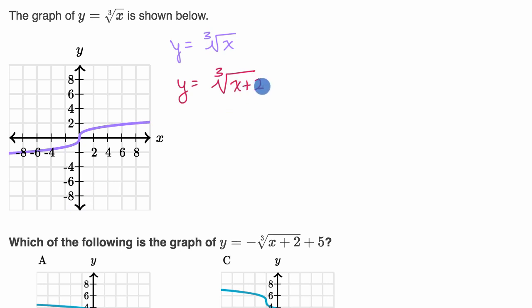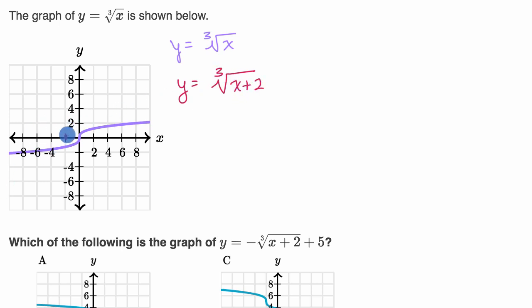What this does is it shifts the curve two to the left. We've gone over this in multiple videos before. At x equals negative two, you're going to take the cube root of zero, which gives you zero right over there. So we have now shifted two to the left.